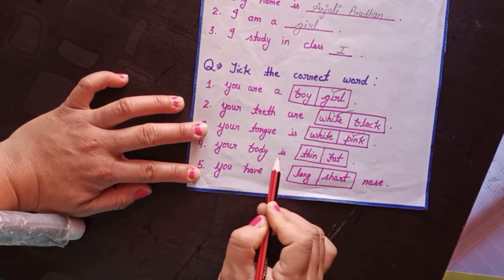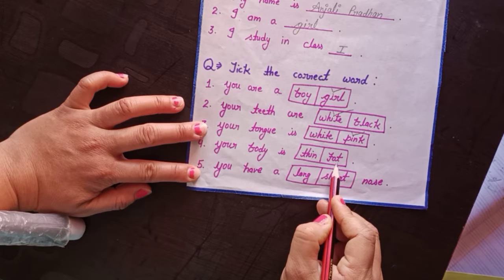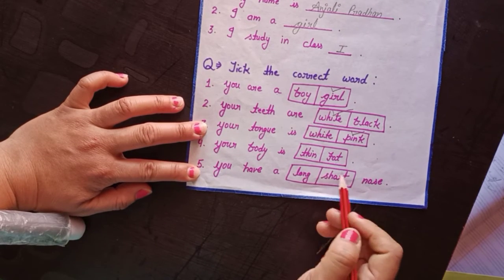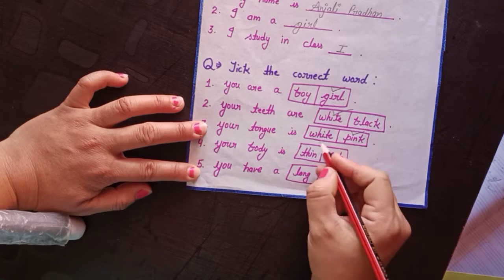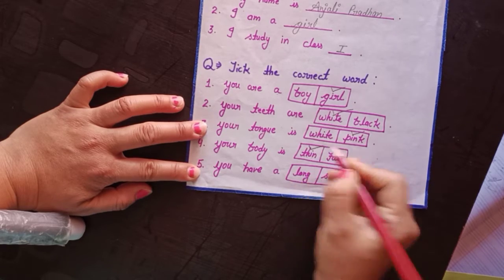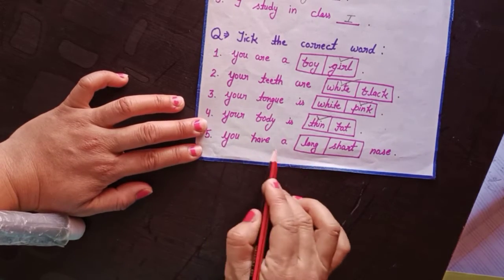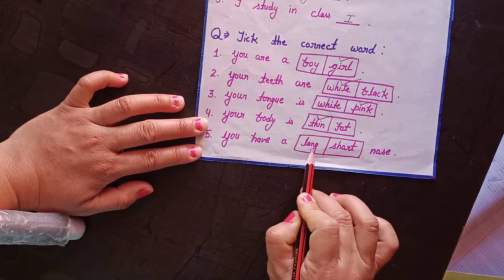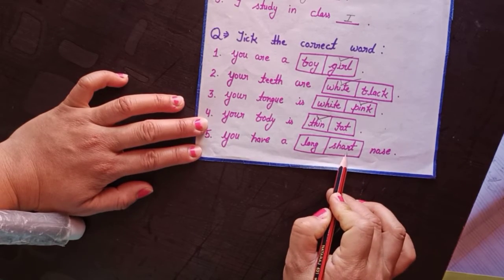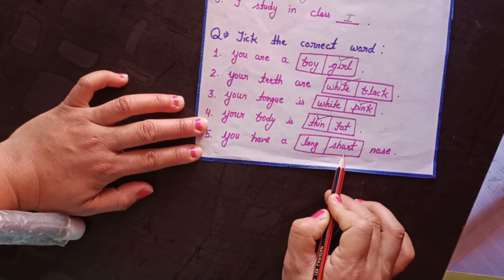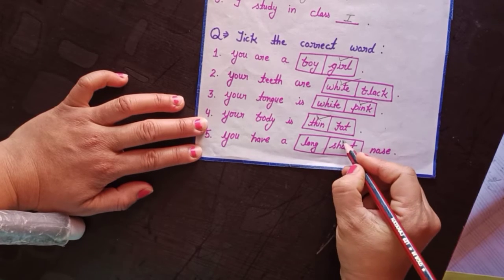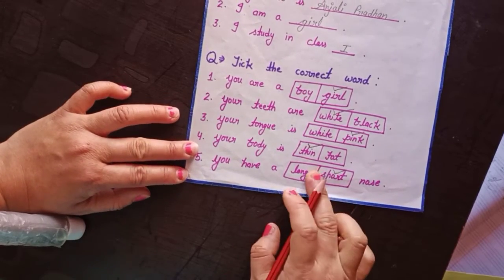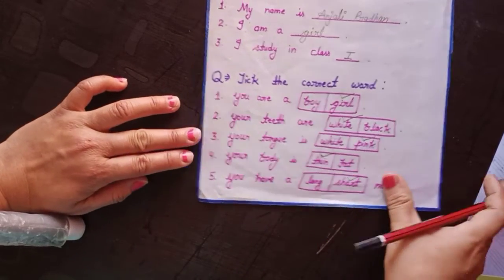Next: your body is thin or fat — thin. So you have to tick thin. Next: you have a long or short nose — your nose is short, so tick short. Alright? That's how you have to do it. So next, turn the page.